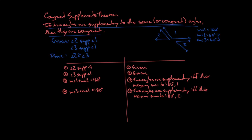Now I've got these equations containing angles 2 and 3, which is great. How can I combine them into one equation containing both angle 2 and angle 3? Both expressions are equal to 180 degrees, so by the transitive property, they're equal to each other. Statement 5: the measure of angle 1 plus the measure of angle 2 equals the measure of angle 3 plus the measure of angle 1. Reason: transitive property, from statements 3 and 4.